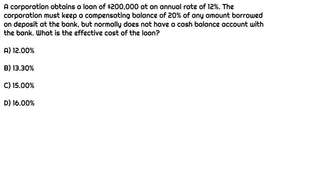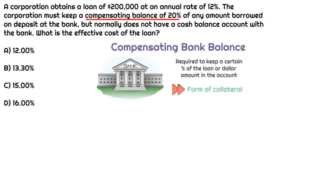In this question, the company obtained a loan for $200,000. However, the lender said you have to have a compensating amount in your bank — a compensating bank balance. So first off, we need to understand really what this means.